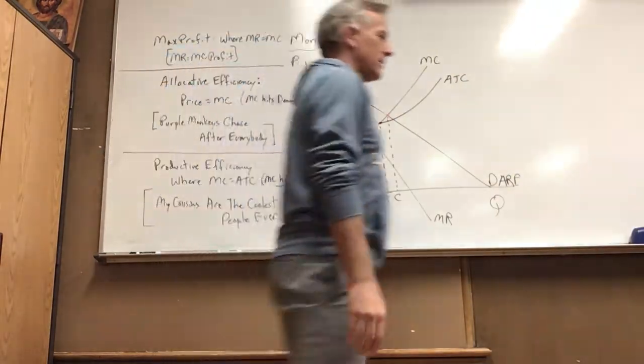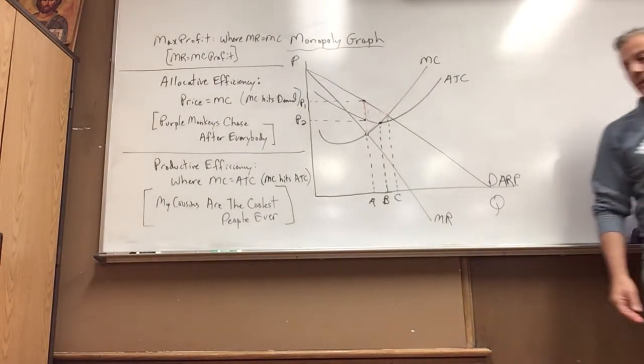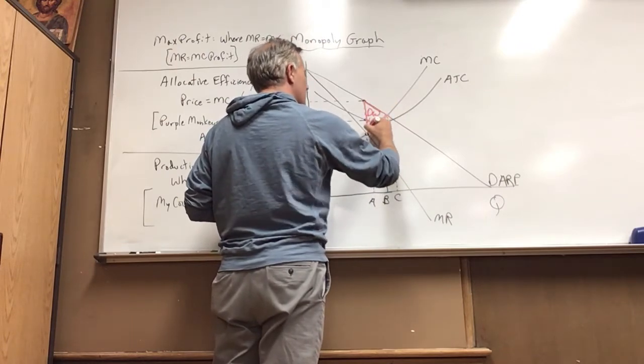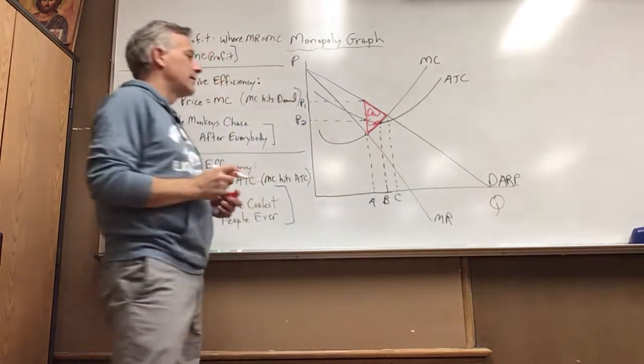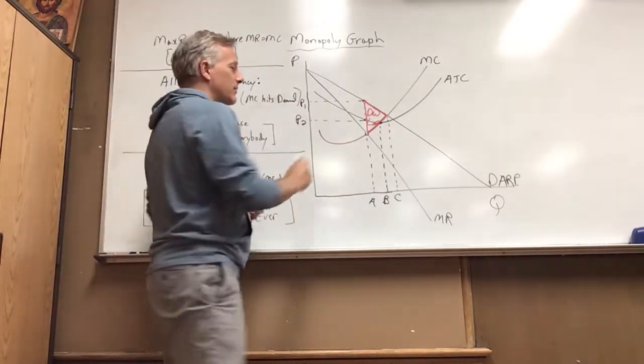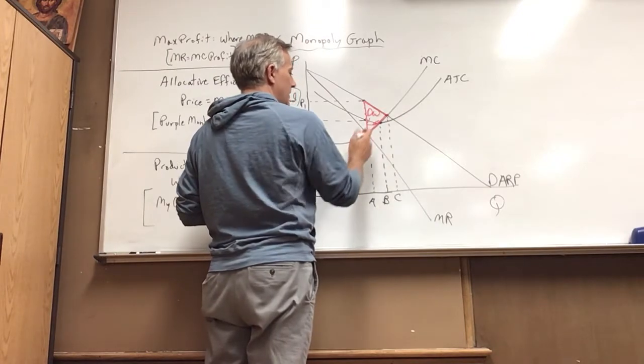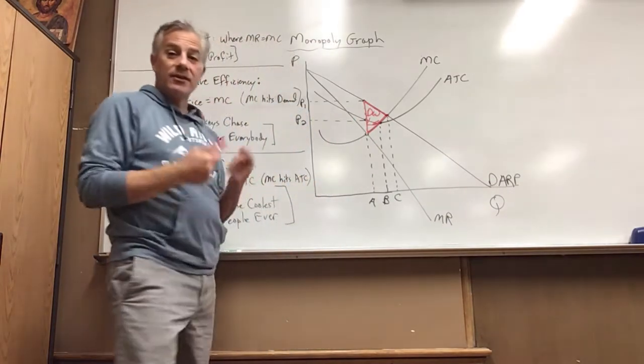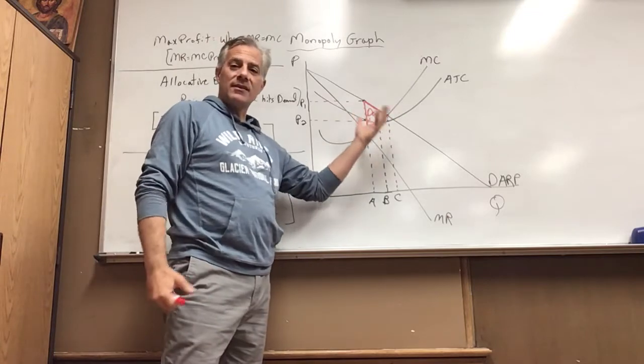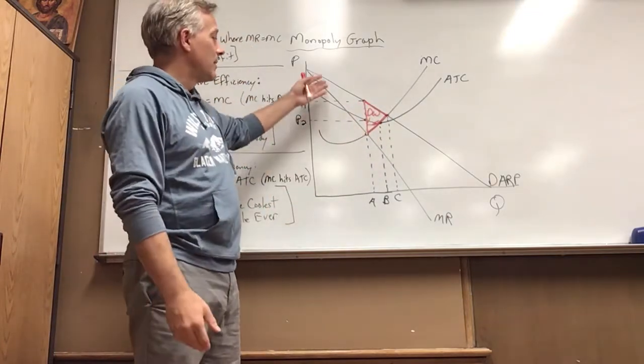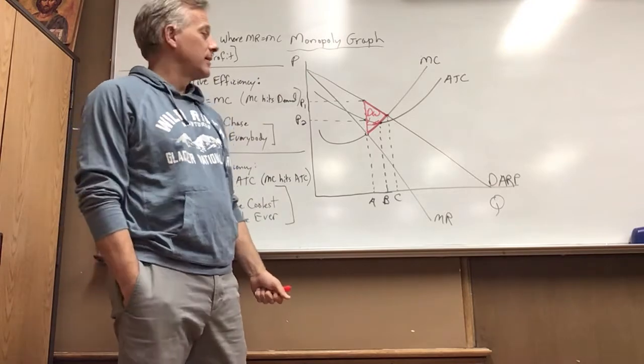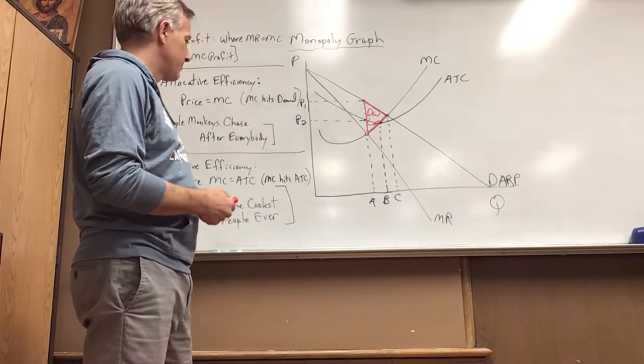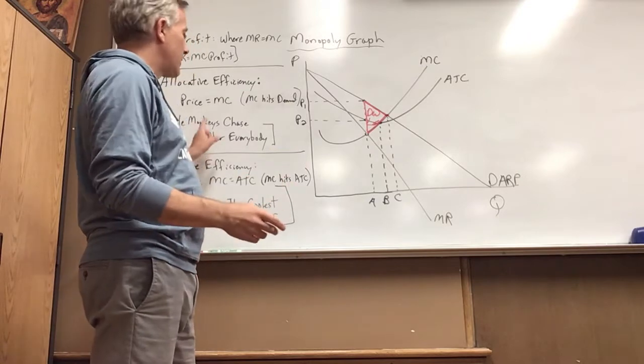This is going to be our region of deadweight loss, and deadweight loss is pretty much always a triangular shape. That's our region of deadweight loss and it goes from the allocatively efficient quantity back to our quantity of max profit. Deadweight loss, just as it sounds, is a bad thing. This is a loss of welfare benefit to producers and consumers, primarily to the consumers. The consumer is the big loser here, paying a higher price than they should have to. So that's allocative efficiency where price equals marginal cost.